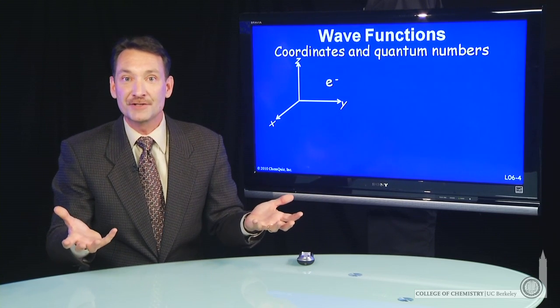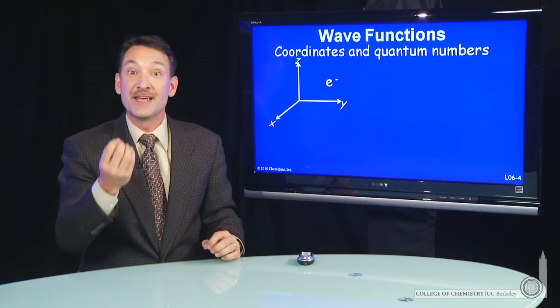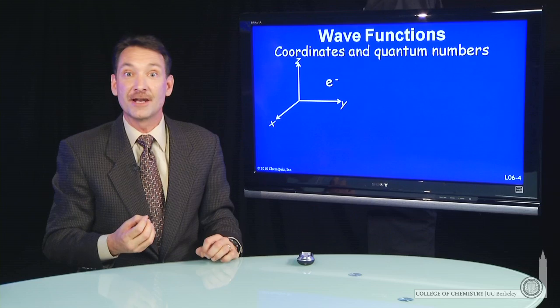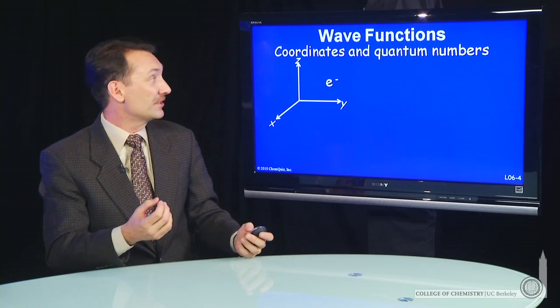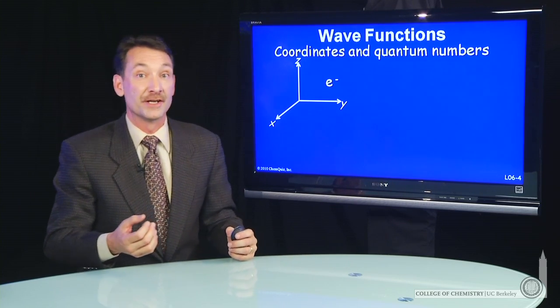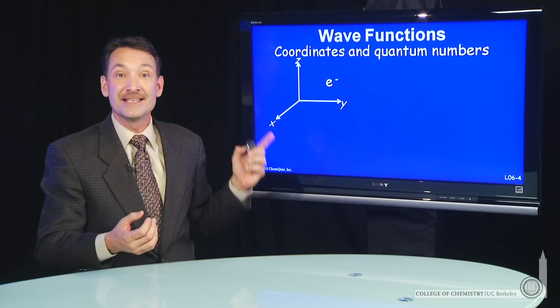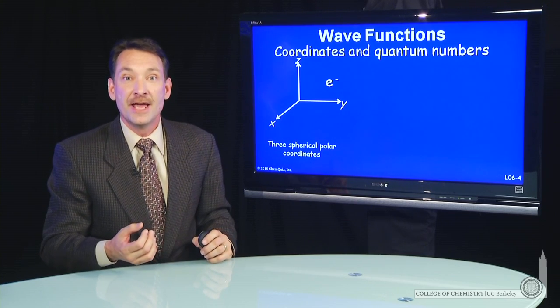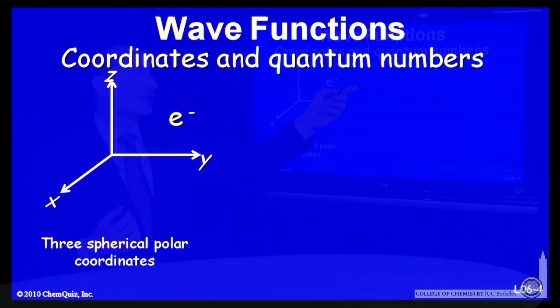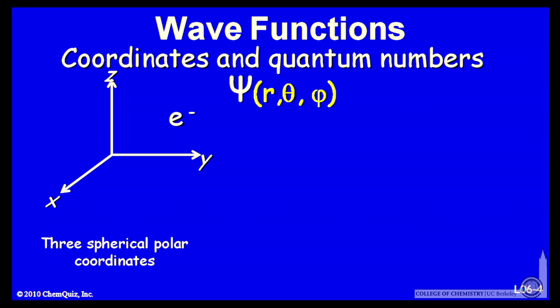First, we'll have to describe three-dimensional space in terms of easy parameters for quantum mechanical calculations. We'll do that using something called spherical polar coordinates. So we'll take the x, y, z dimensions of space, and rather than write our wave functions in terms of x, y, and z, we'll write them in terms of r, theta, and phi, the spherical polar coordinates.